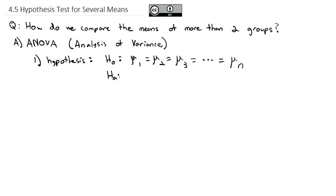And the alternative hypothesis is that at least one mean is different. We don't know which mean, but just one mean is different than the rest.